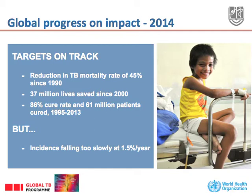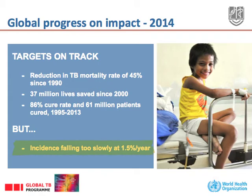However, despite all the successes, the incidence of tuberculosis is falling still far too slowly, at 1.5% per year only, which means it will take decades before we can think about elimination.